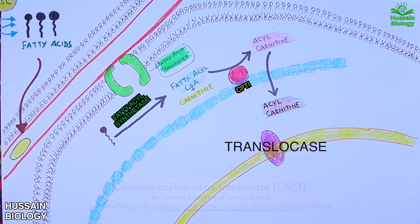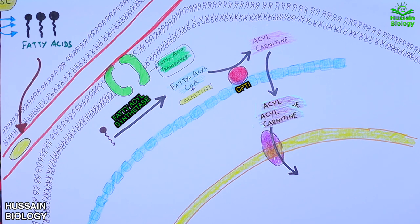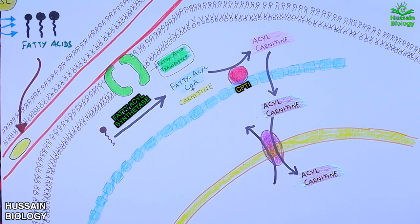Here we see acyl-carnitine passes through this translocase into the matrix. But this translocase protein is an antiporter, which means from the matrix we need to transport carnitine into the intermembrane space, and then from the intermembrane space this carnitine is sent out.